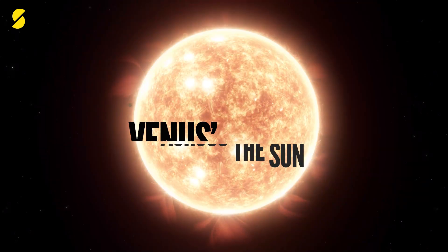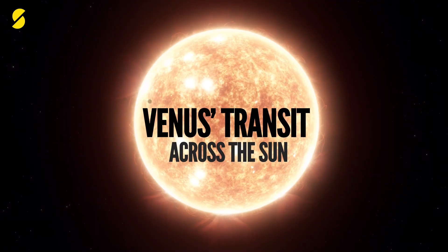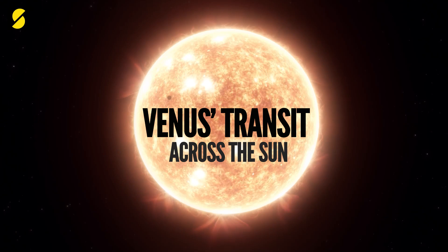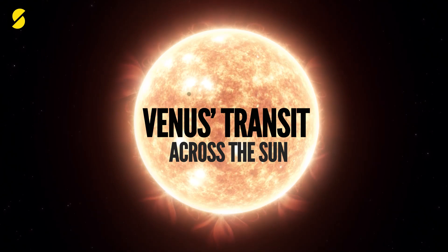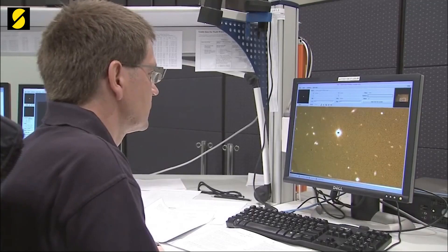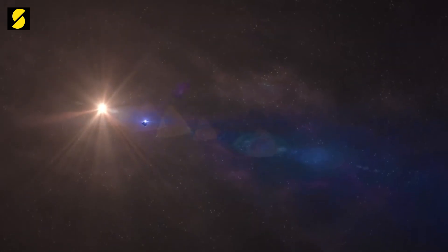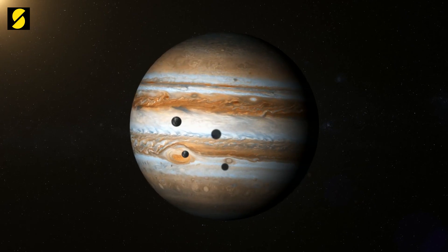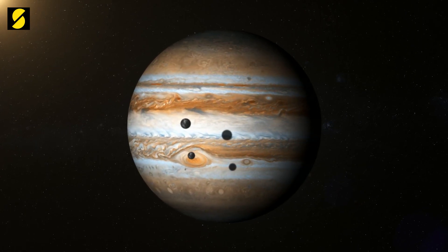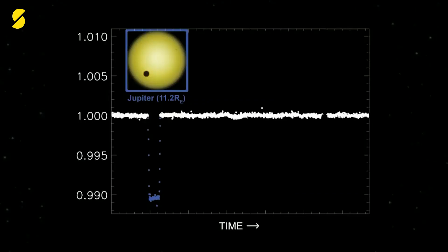You can also observe transits within our solar system when Venus or Mercury travel between us and the Sun. However, this star's flux dims by a tremendous amount without any regularly repeating signals. Now, planets do not get much bigger than Jupiter. When Jupiter passes in front of our Sun, the Sun makes a 1% drop in the Sun's brightness.